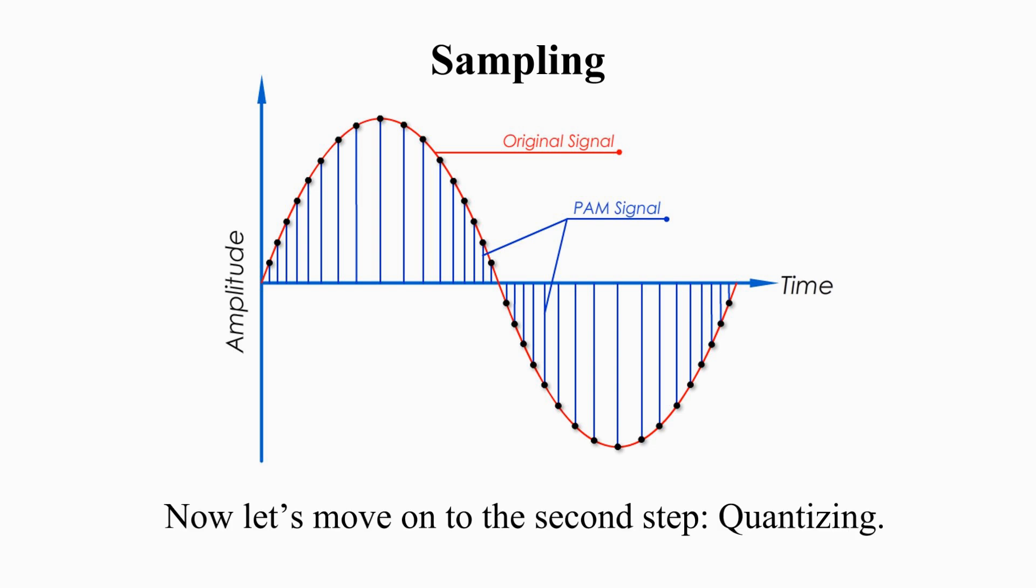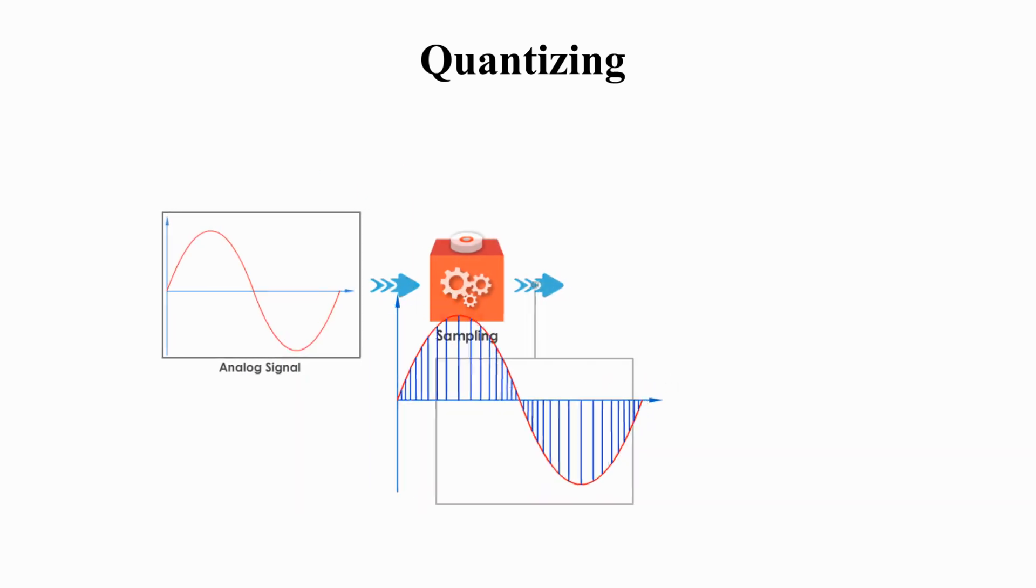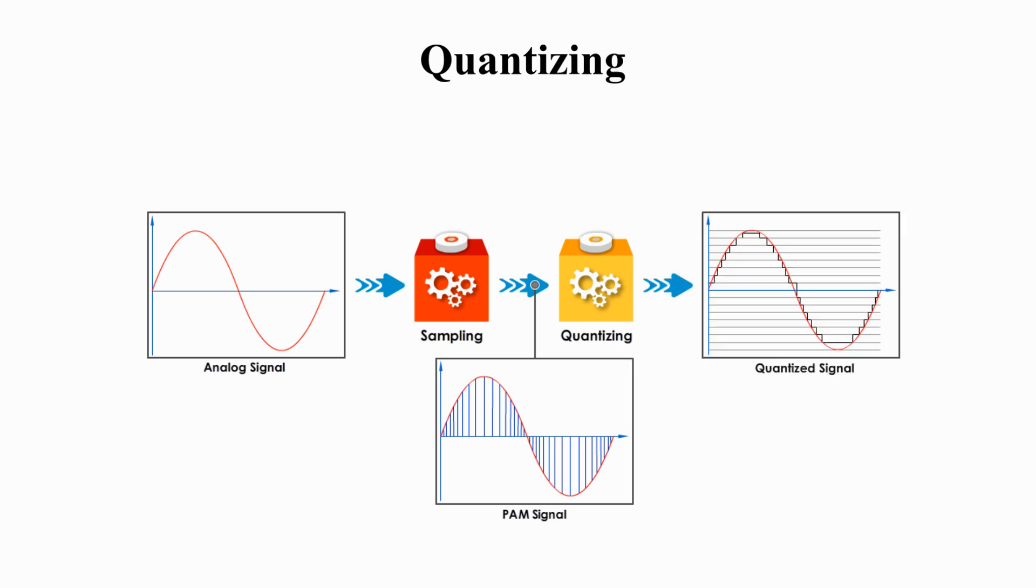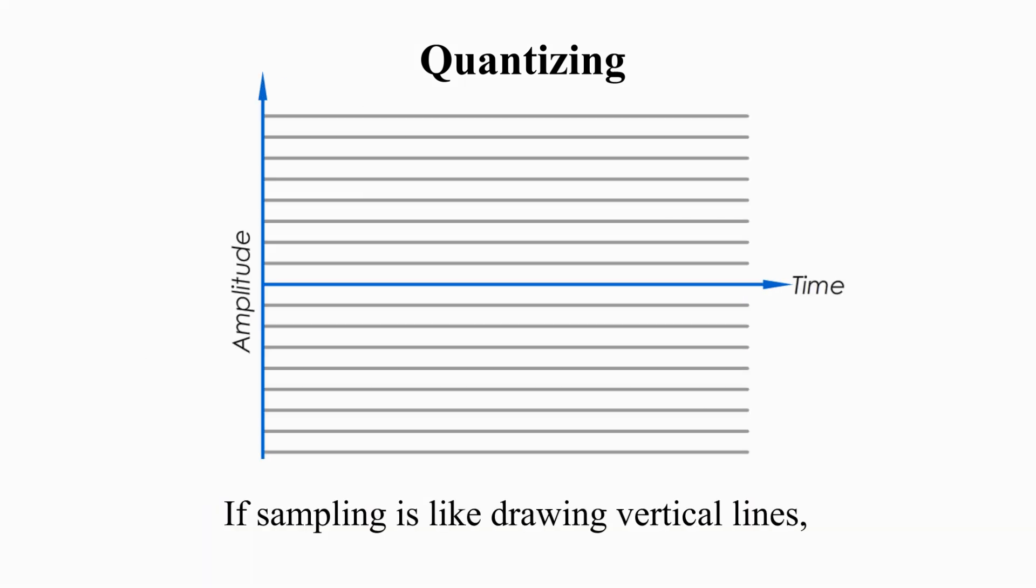Now let's move on to the second step, quantizing. If sampling is like drawing vertical lines, quantizing is like drawing horizontal lines, and then making each sample match one specific horizontal line. Let me explain the process.